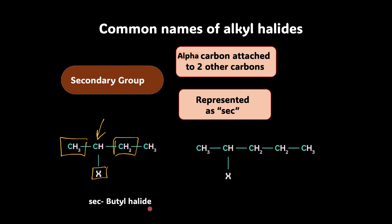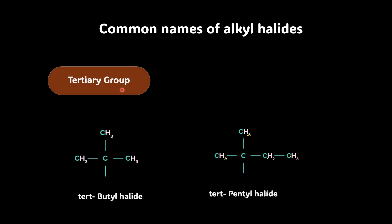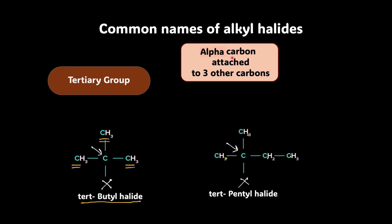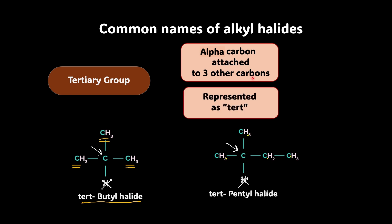Check this: with the halogen attached to a carbon connected to two other carbons in a 5-carbon chain, the name is sec-pentyl halide. For a tertiary group, the alpha carbon is attached to three other carbons. For example, with a halogen attached to a carbon connected to three alkyl groups in a 4-carbon system, we call it tertiary butyl halide. The prefix is written as 'tert' — T-E-R-T — for tertiary.